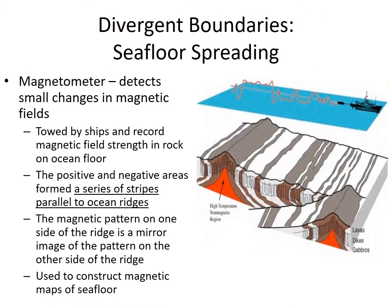We use a magnetometer to detect small changes in magnetic fields. These are constantly being used around the world, usually towed by ships. As ships go across the ocean, they record the magnetic field strength in the rock on the ocean floor. Positive and negative areas form a series of stripes parallel to the ocean ridges, with a mirror image across the ridge on both sides, which is used to construct magnetic maps of the seafloor important for understanding plate movement.